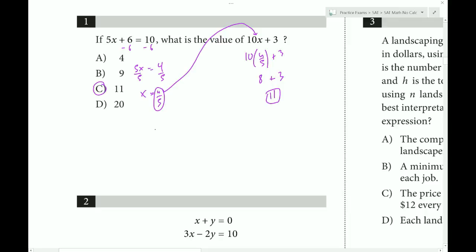There's a shortcut where we can stop at 5x equals 4 and double both sides, giving us 10x equals 8. Then we can plug in for the entire 10x term, so it would be 8 plus 3, which also equals 11.